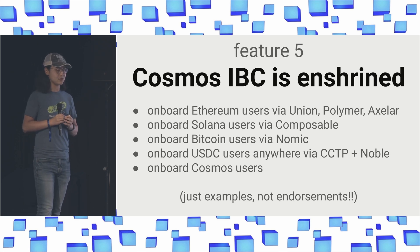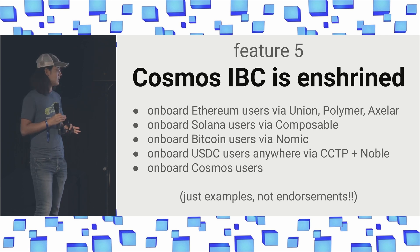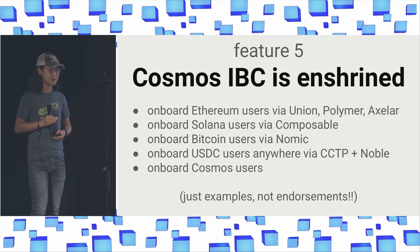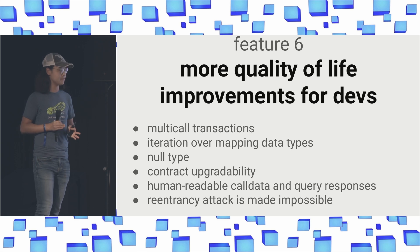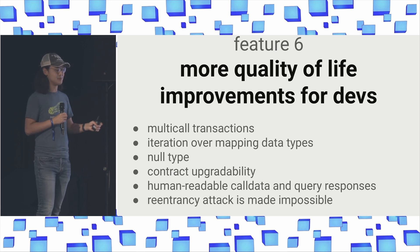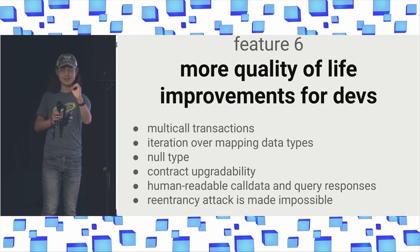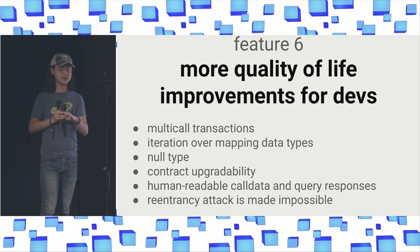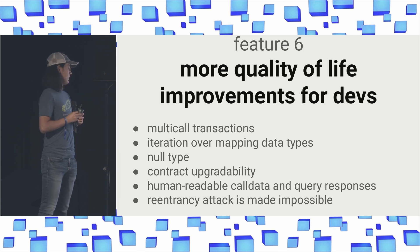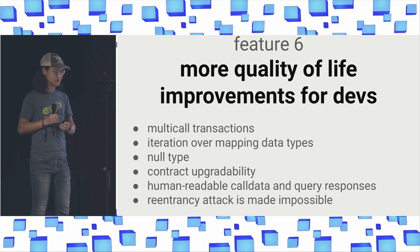Cosmos IBC is natively enshrined as a native bridging solution, allowing you to onboard users seamlessly from every ecosystem. For developers, Grac also includes quality-of-life improvements: transactions are natively multi-call; mapping data types are iterable; we have null types — unlike Solidity where you can't distinguish an uninitialized number from zero; contracts are upgradable without proxy patterns; call data are human-readable; and reentrancy attacks are simply impossible in Grac.